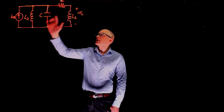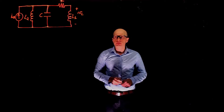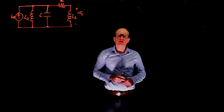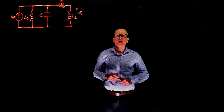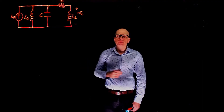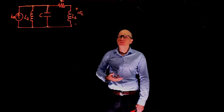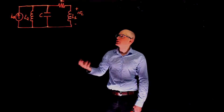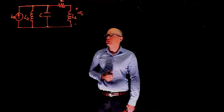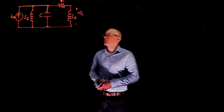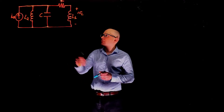We have two inductors, a capacitor, and a resistor. For the state space representation, the first question is: what are the state variables? A good first attempt is to look at elements in the circuit that can store energy. We have two inductors that store energy in the form of a magnetic field, depending on the current through them, and one capacitor that stores energy in the form of an electric field, depending on the voltage across it.